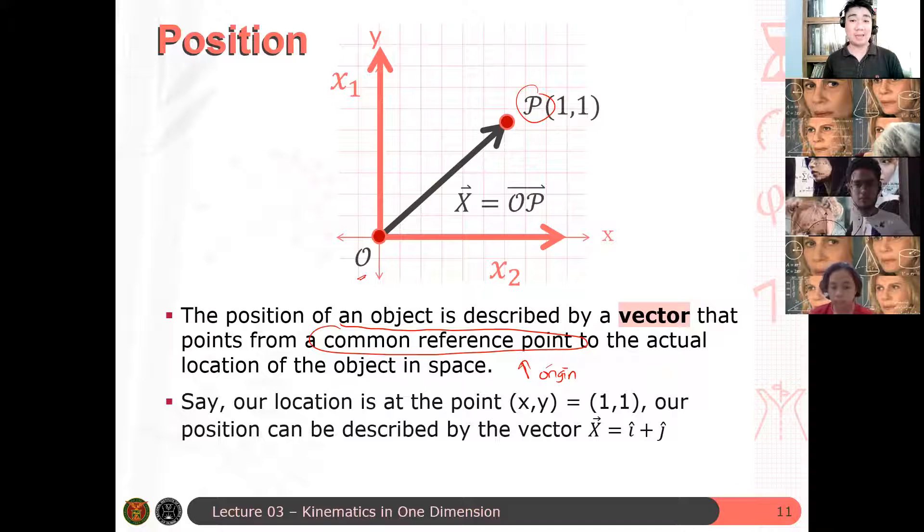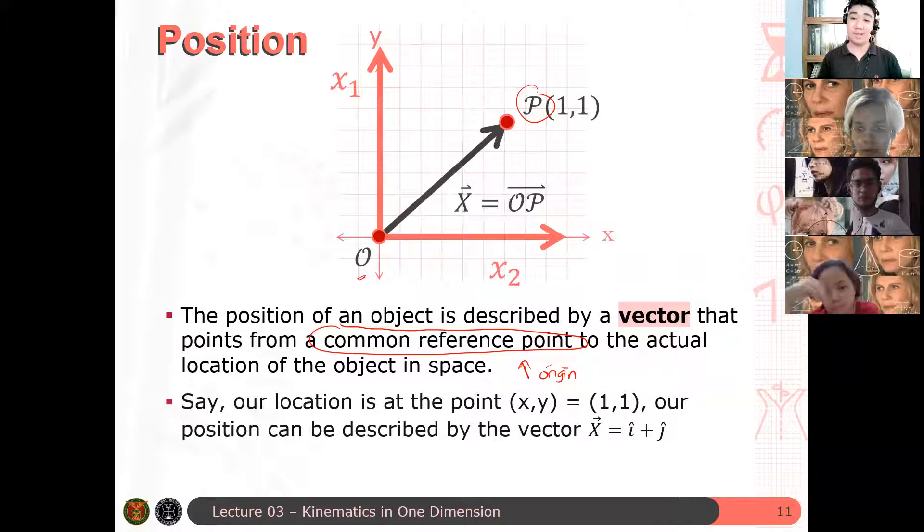So for one dimension, medyo mas simple na lang kasi kailangan mo lang isipin isang unit vector, which is i hat. But when you go to 2D and 3D after some time, maybe next week, then dun na lumalabas yung i hat and j hat components and possibly k hat components. Is there any question? Are there any questions? May mga katanong ba?